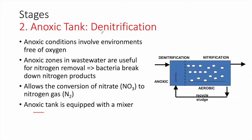Next, we have the denitrification in the anoxic tank — anoxic conditions involve environments free of oxygen, with no air diffusers. In the anoxic zones, we will be able to remove nitrogen through the proliferation of anoxic bacteria. These bacteria, starved of oxygen, will break down nitrogen products. In this stage, we have the conversion of nitrate and NO3 into nitrogen gas. Notice that the anoxic tank is equipped with a mixer.